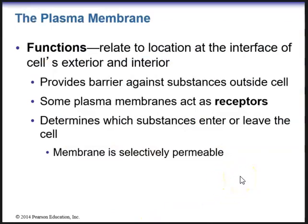The functions of the plasma membrane relate to its location at the interface of the cell's exterior and interior. The plasma membrane provides a barrier against substances outside the cell, and some plasma membrane components act as receptors for hormones or neurotransmitters. The membrane also determines what substances can enter or leave the cell — it is selectively permeable, meaning it can decide what comes into or leaves the cell.